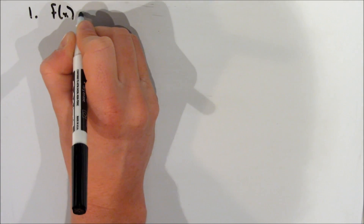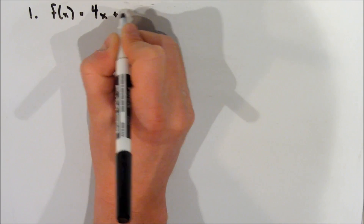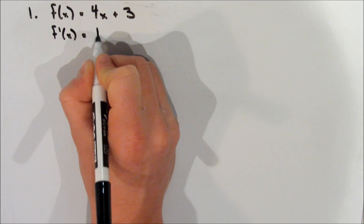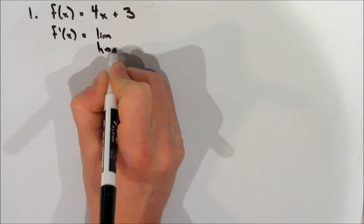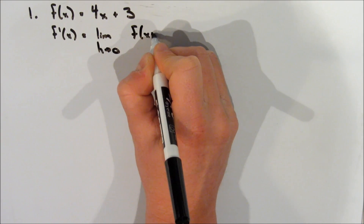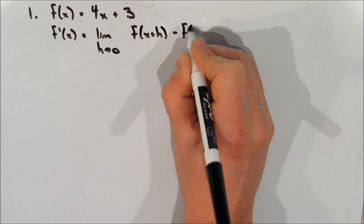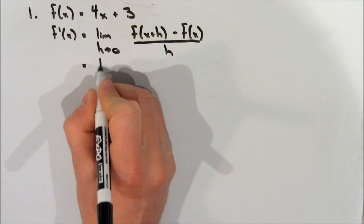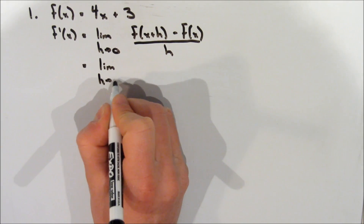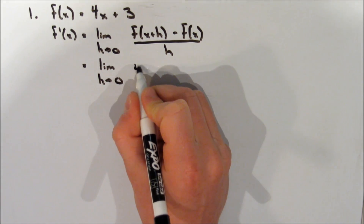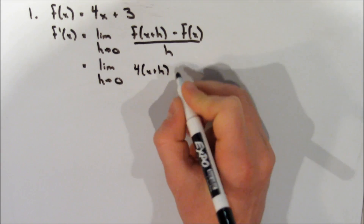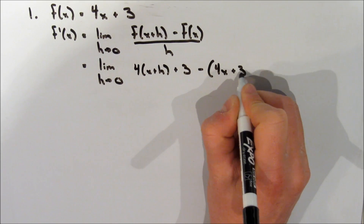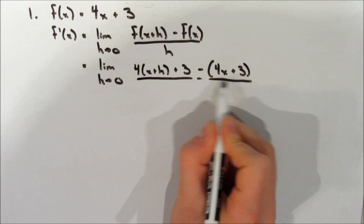For our first example, we take the function f of x is equal to 4x plus 3, and we want to take the derivative. So we write f prime of x is equal to the limit as h approaches 0 of f of x plus h minus f of x, all over h. We sub in x plus h wherever x appears in f of x, and then write out f of x again, all over h.